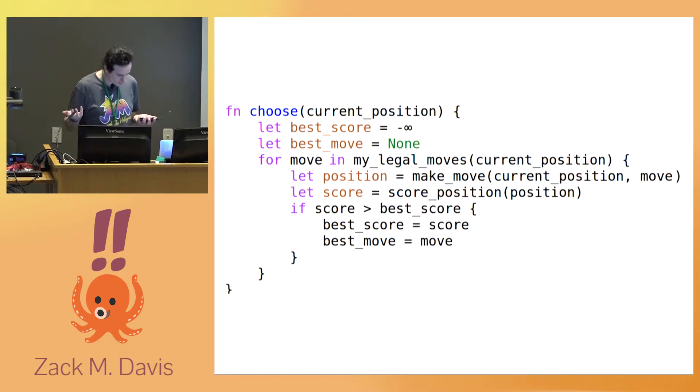So consider a player pondering her move. For every possible legal move she could make, she knows what the board position will look like after that move and can calculate the value of that position. So you might think she should choose the move that results in the best value. For example, if you can capture the opponent's queen, that would make the subsequent board position be worth nine more points.